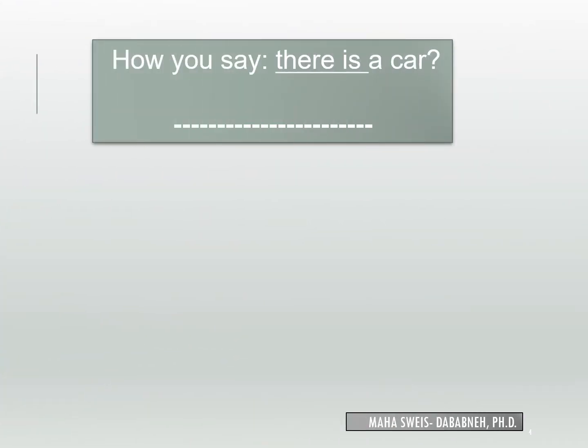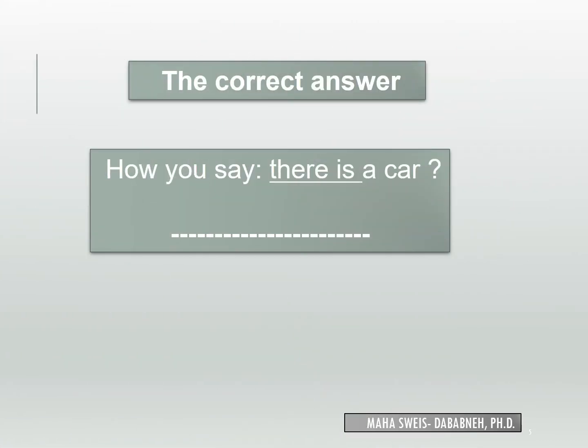Let's do this example. How do you say 'there is a car'? Can you do it by yourself? The answer is: Hunaka Siyaraton, or Hunaka Siyara. This is a singular example — Siyara means one car.